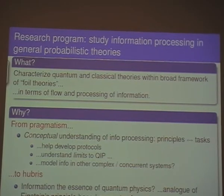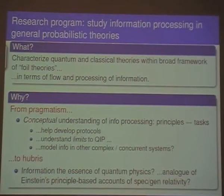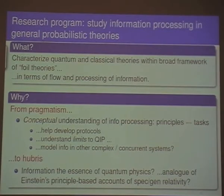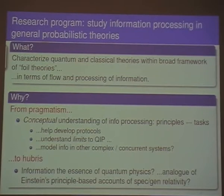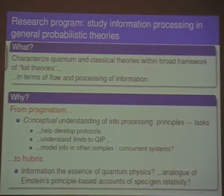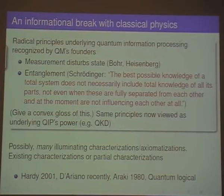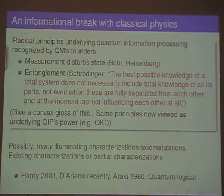In particular, this project has some understanding in terms of the flow and processing of information within different types of theories. The motivations are some pragmatic ones — it could help us conceptually understand information processing, and thereby maybe develop protocols or model information in other complex or concurrent systems. And then there are the hubristic ones about maybe this is the right way to see physics and will help us with the way forward integrating with general relativity. Quantum theory's boundaries recognized that there was an informational grade being made in classical physics.